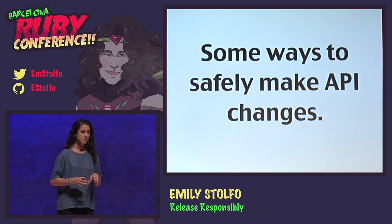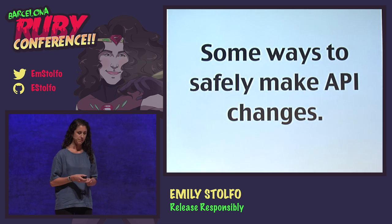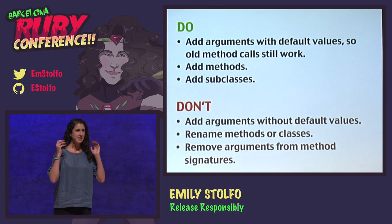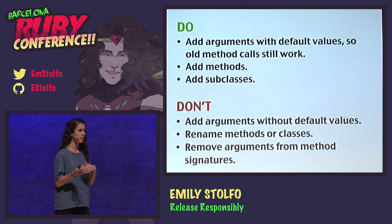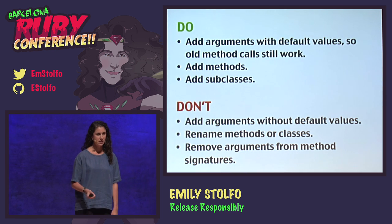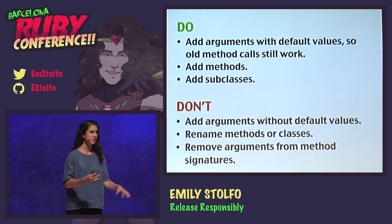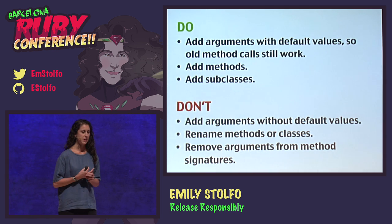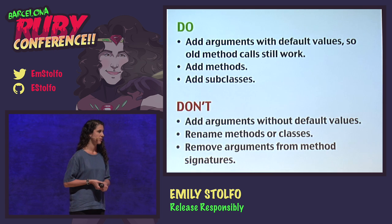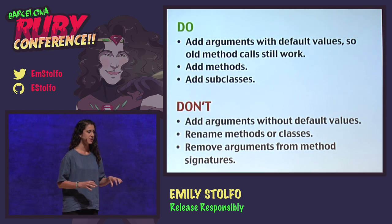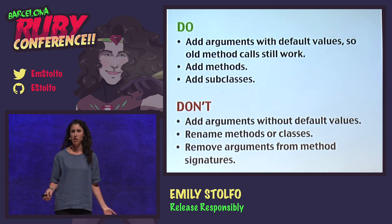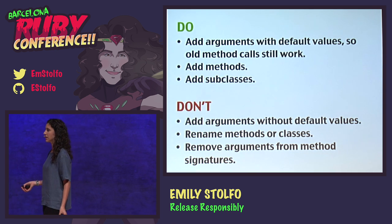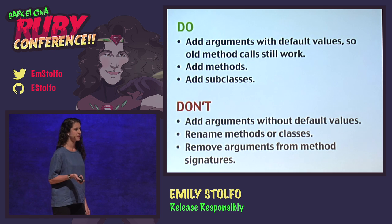More pragmatically, some ways to safely make API changes: add arguments with default values so old method calls can still work. Add methods, add subclasses, and change behavior in those subclasses or methods. Don't add arguments without default values. Don't rename methods or classes unless it's a major version where you're planning breaking changes. Don't remove arguments from method signatures. Even if a method seems internal and nobody else is using it, there might be people relying on those signatures.